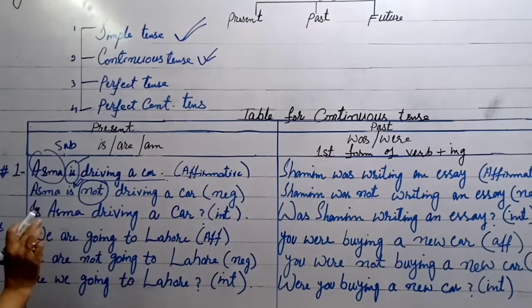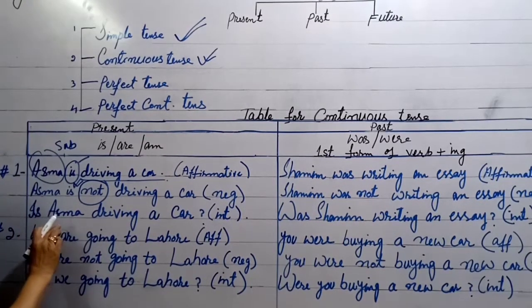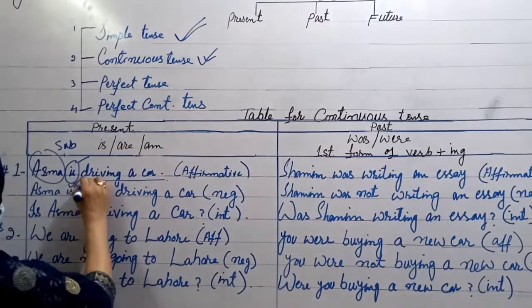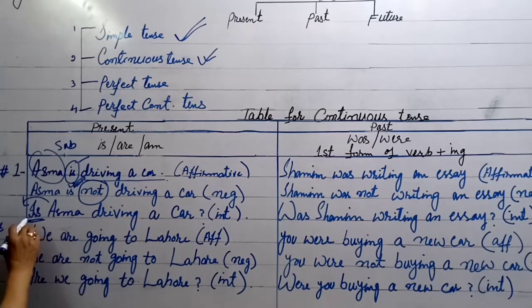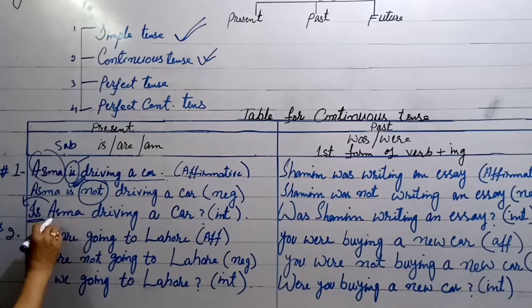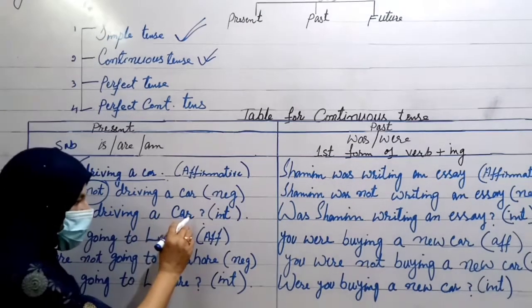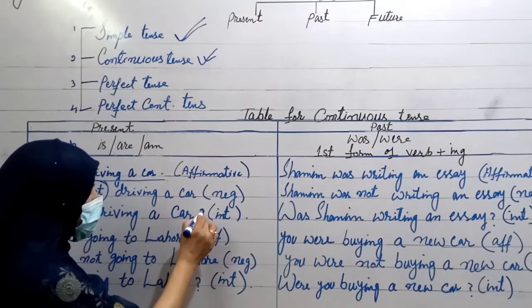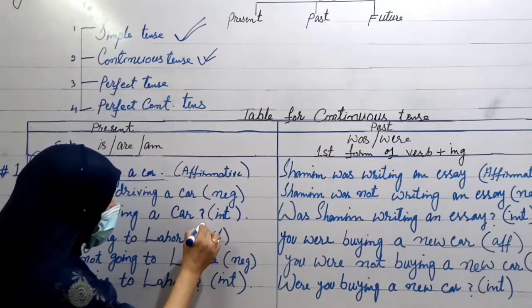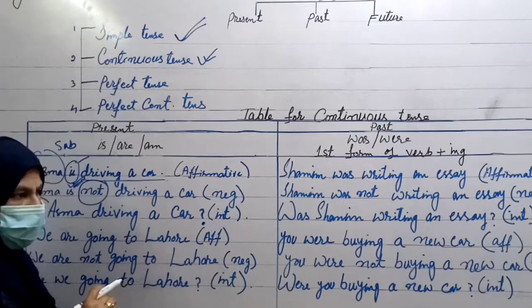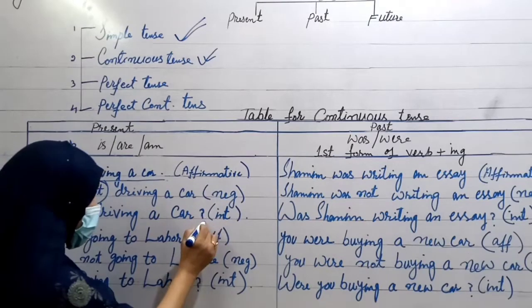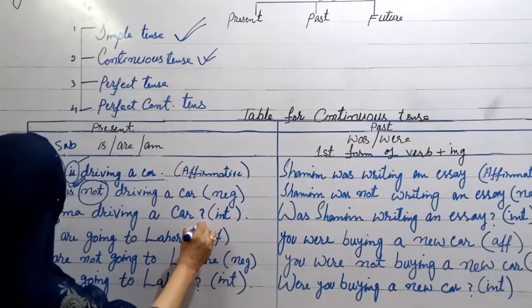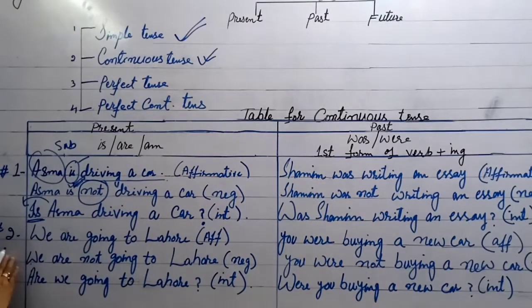If you are going to make the interrogative of the same sentence, the auxiliary verb will come before the subject. As I have shown here: 'Is Asma driving a car?' At the end of the sentence, you must put a sign of interrogation — a question mark. Is Asma driving a car?